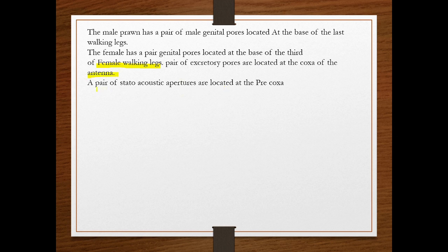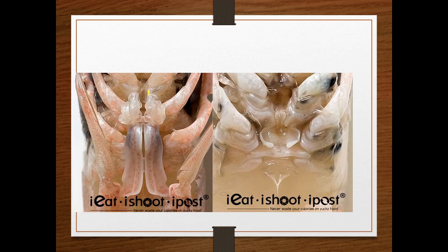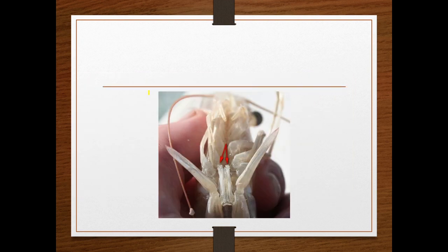A pair of statocysts — the balancing organs — are located at the pre-coxa of the antennules. These will be discussed in further detail later, as part of the complete external morphology of the prawn.